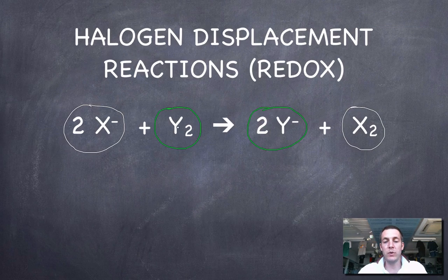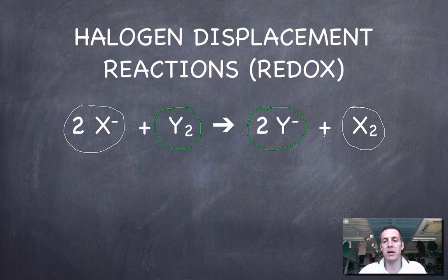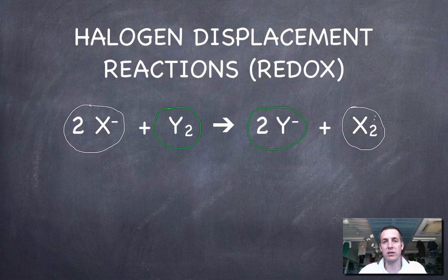And so we can say that Y has displaced X. Y has removed the electrons from X and become Y⁻, kind of kicking X out in the process. So that's what a displacement reaction is in general.